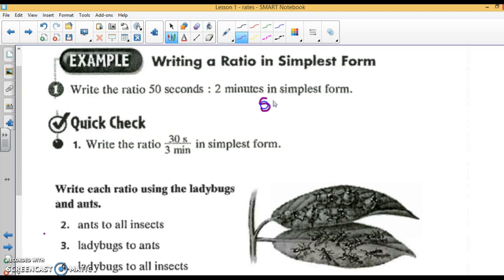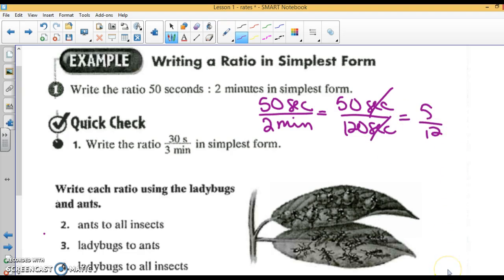Write the ratio of 50 seconds to 2 minutes in simplest form. Well, that would be 50 seconds to 2 minutes. But you cannot simplify these because they are not the same. So I'm going to leave my 50 seconds as seconds but change 2 minutes to 120 seconds. Seconds divided by seconds is 1 - you always want your units to cancel out. If I divide these both by 10, I'll have 5/12. So the simplest form is 5/12, or you can write 5 to 12 or 5:12.